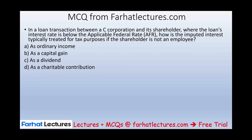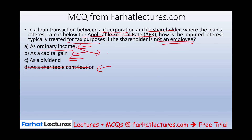Here's a multiple-choice question from FarhatLectures.com: In a loan transaction between a C corporation and its shareholders where the loan interest rate is below the AFR, how is the imputed interest treated for tax purposes if the shareholder is not an employee? Is it ordinary income, capital gain, dividend, or charitable contribution? We can eliminate charitable contribution — there's no charitable relationship here. Ordinary income applies when the person works for the company, but they're not an employee. Capital gain requires selling something above its basis. When it's not an employee, the relationship takes the form of a dividend.